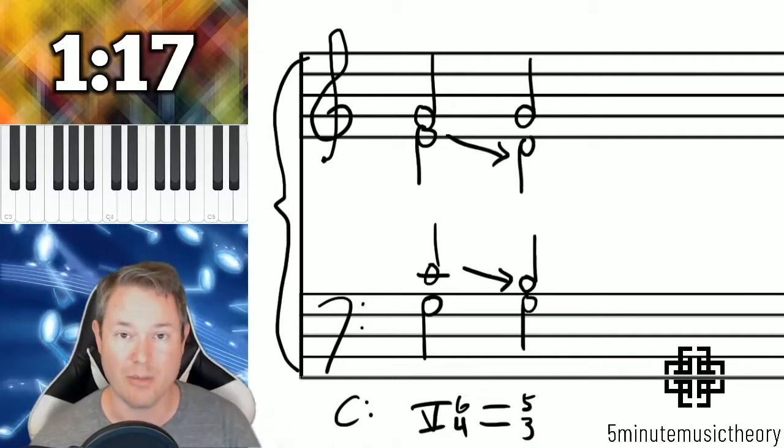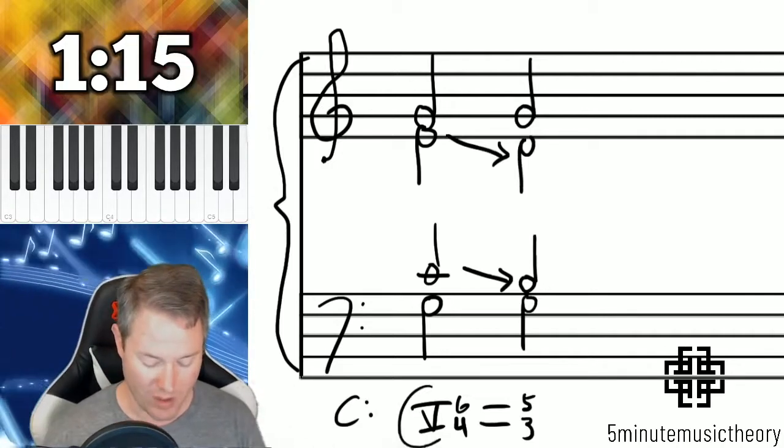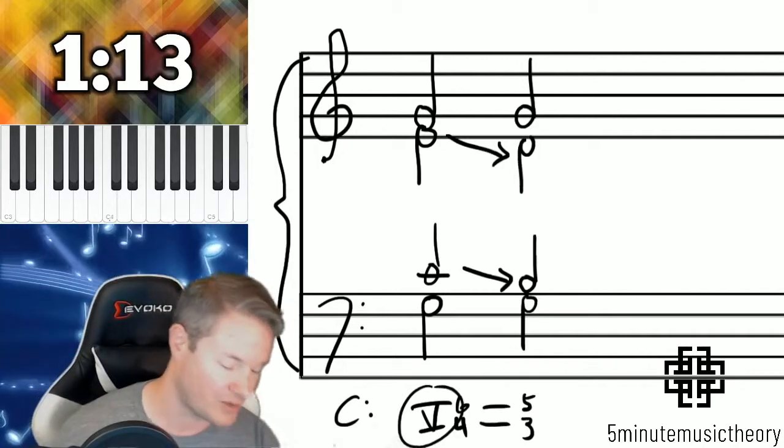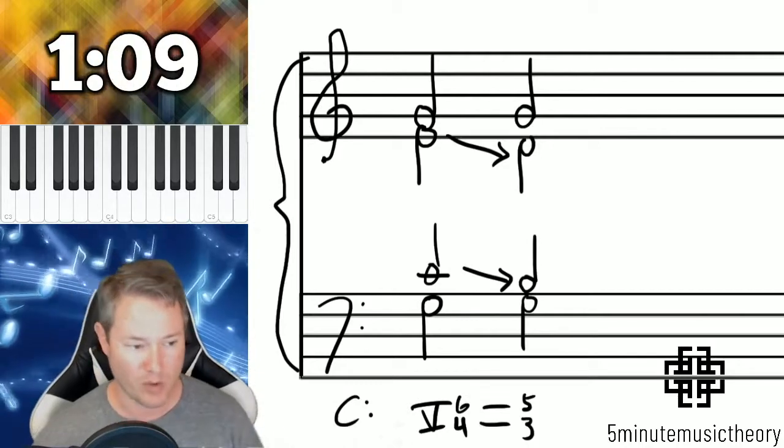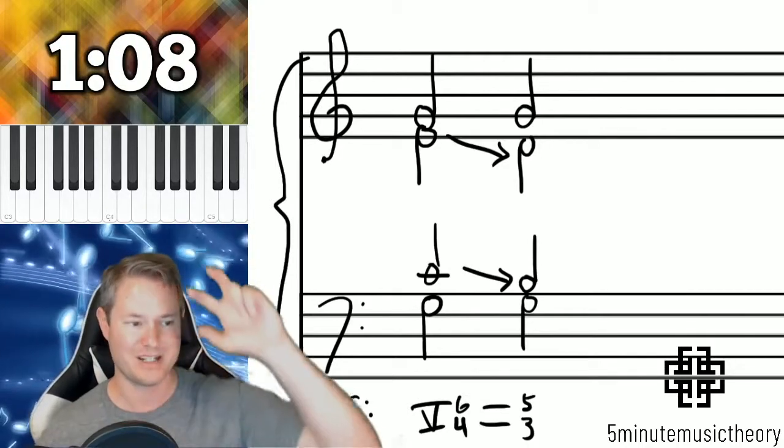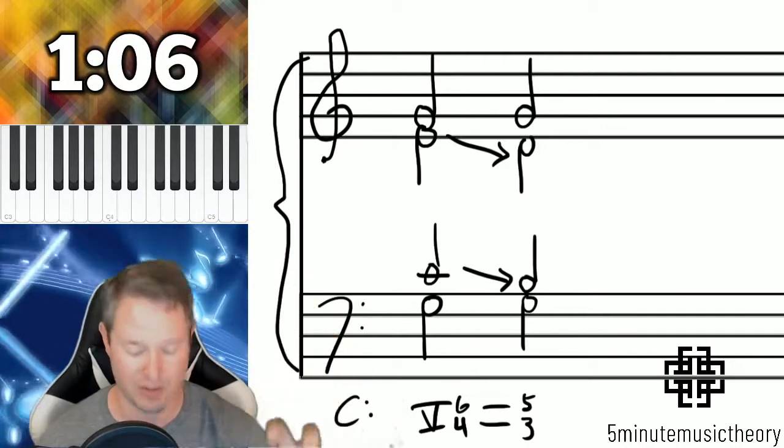So that turns into a dominant triad. So although this isn't spelled like a dominant triad what we're doing by labeling it this way is showing that both of these are dominant chords it just happens to have a 6-4 that then resolves down to a 5-3.